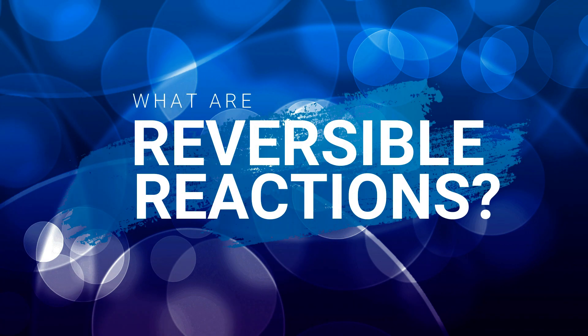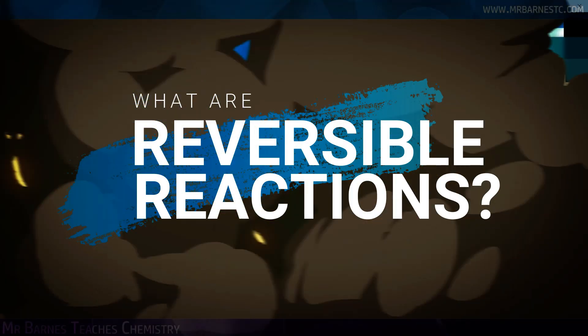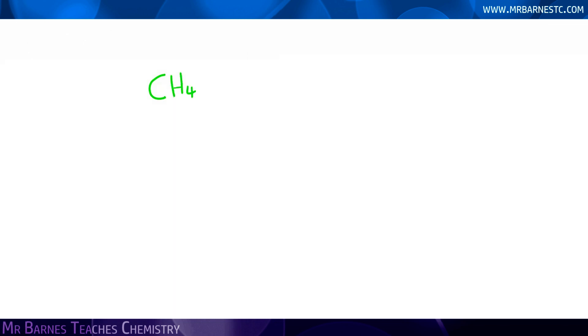Hi guys, welcome to this video looking at what reversible reactions are. If we have a look at a normal symbol equation, for example methane reacting with oxygen, you can tell from this symbol equation that it produces carbon dioxide and water.